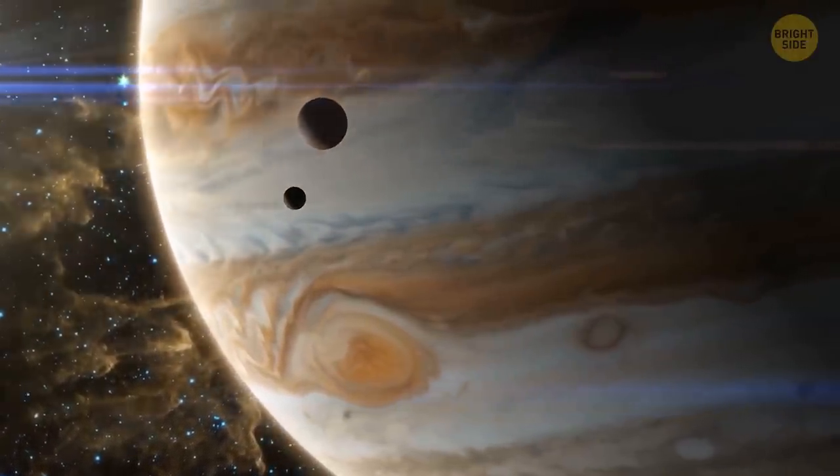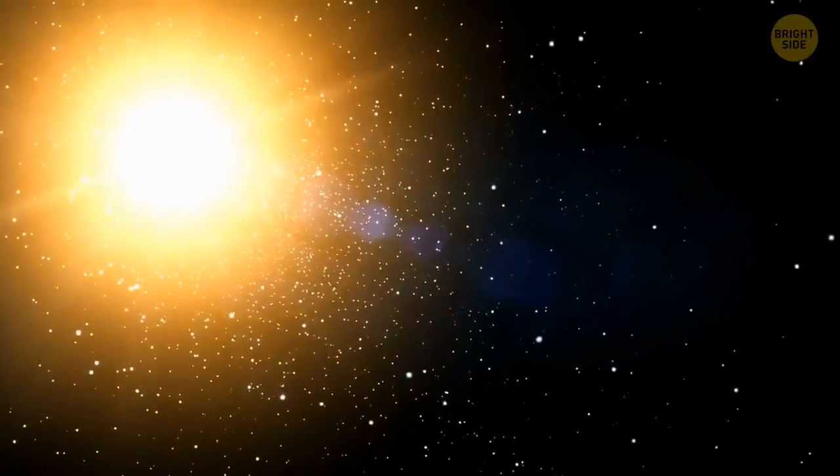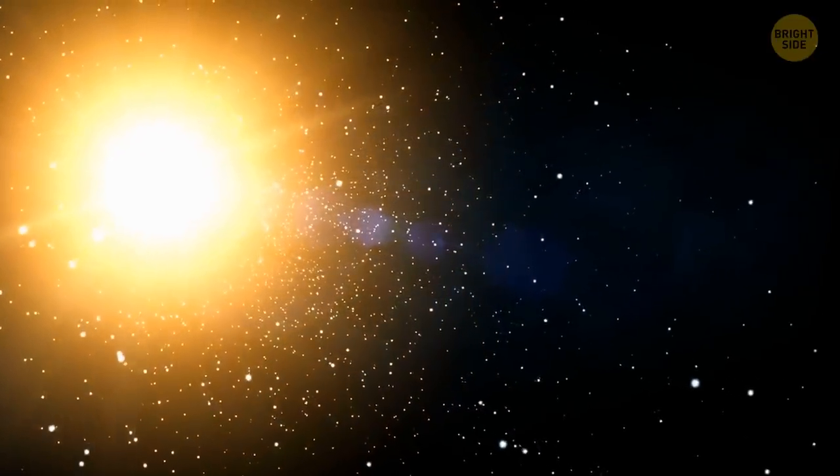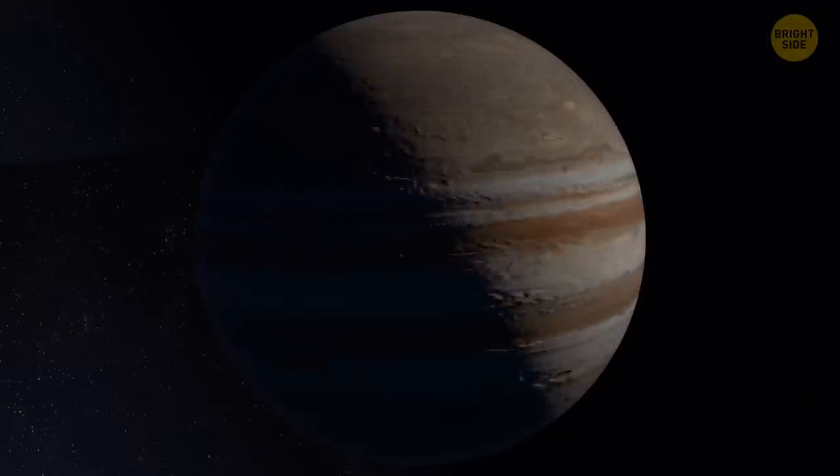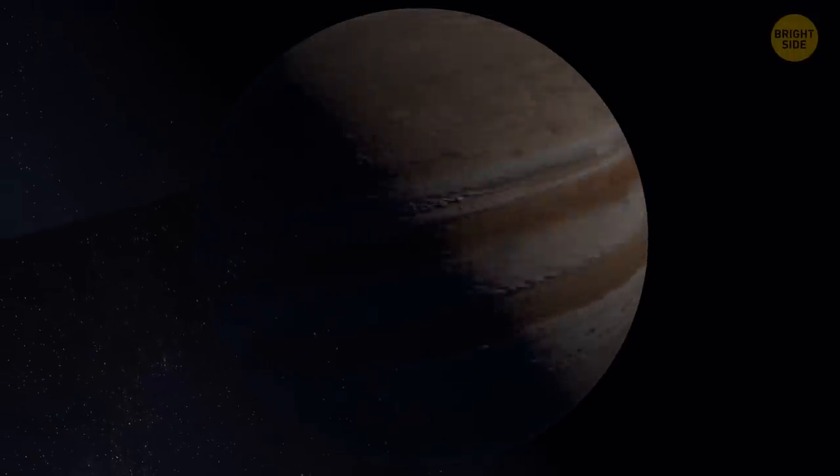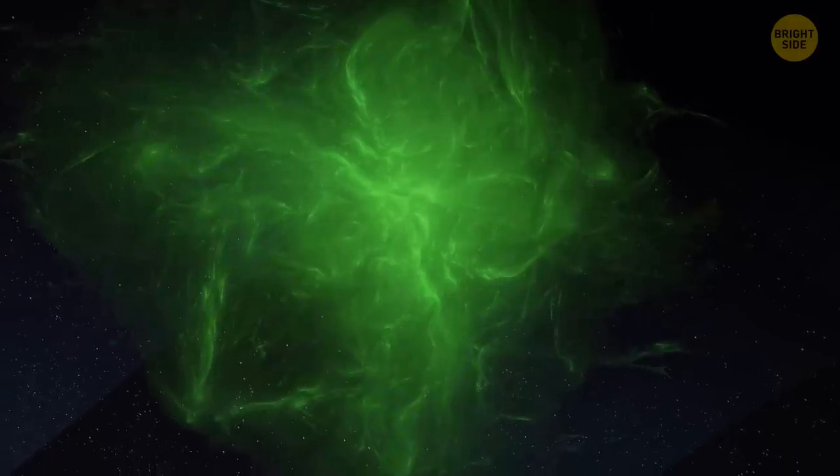This planet is known for its thick, swirling atmosphere. But with a weaker gravitational pull, Jupiter would probably have a hard time holding on to it. So over time, it would slowly escape into space, leaving behind a thin atmosphere composed mainly of nitrogen and oxygen.